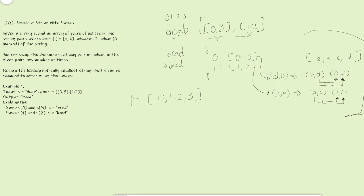Once we run union(0, 3), the parents array becomes [0, 1, 2, 0] — index 3's parent is now 0. Then running union(1, 2) makes index 2's parent 1, giving us [0, 1, 1, 0]. I'm arbitrarily choosing the left element as the parent. You can see how this is going to relate to the dictionary we defined.